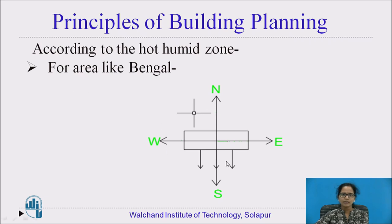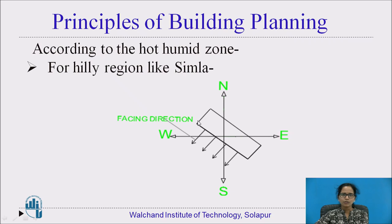For an area like Bengal, when the orientation of the building is towards the east-west direction, the facing should be towards the south direction. According to the hot humid zone, for the hilly region like Simla, the orientation of the building should be in the south-east and north-west direction, but the facing should be towards the south-west direction, which will be the best facing considered.